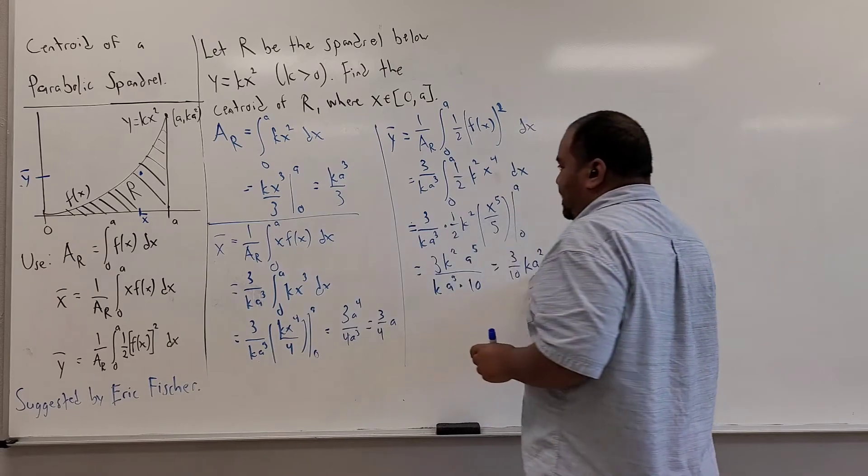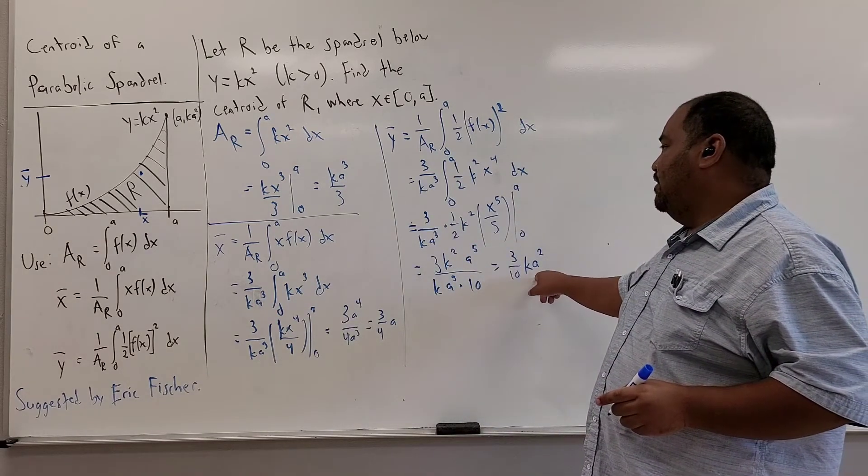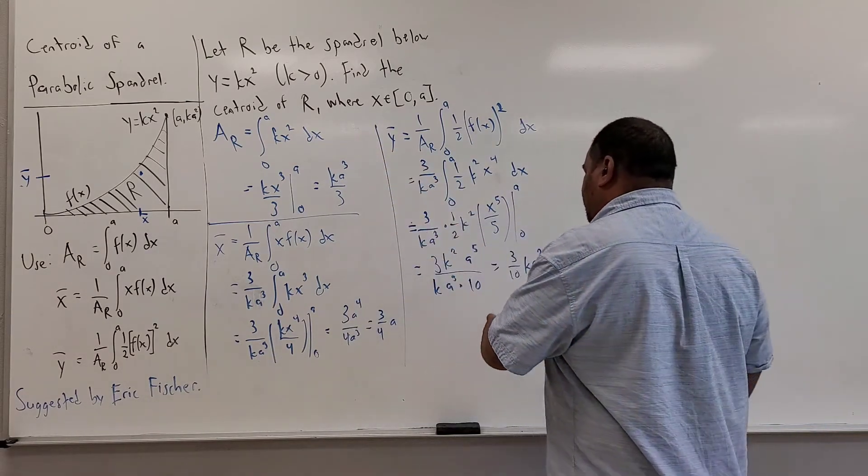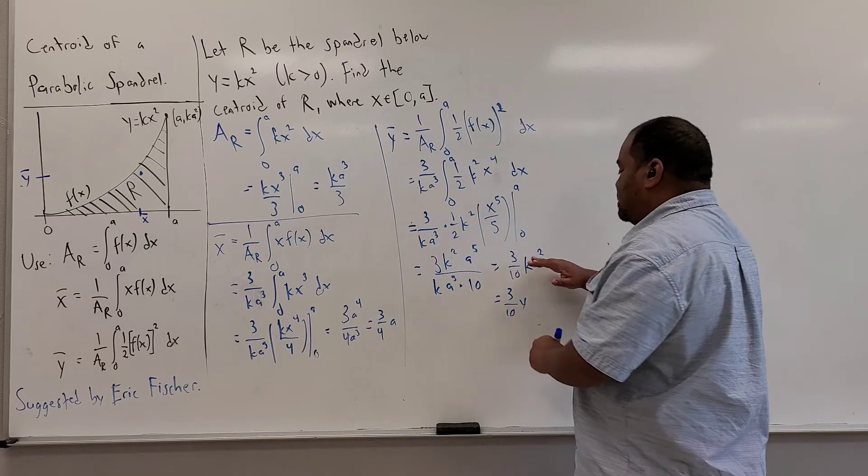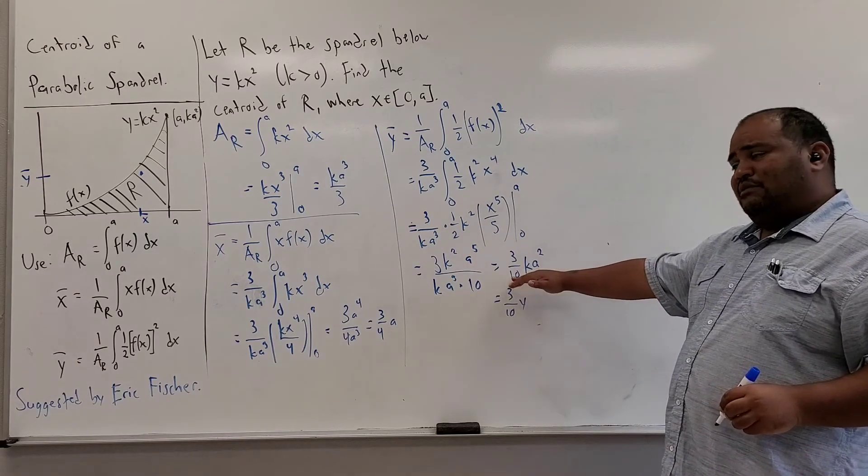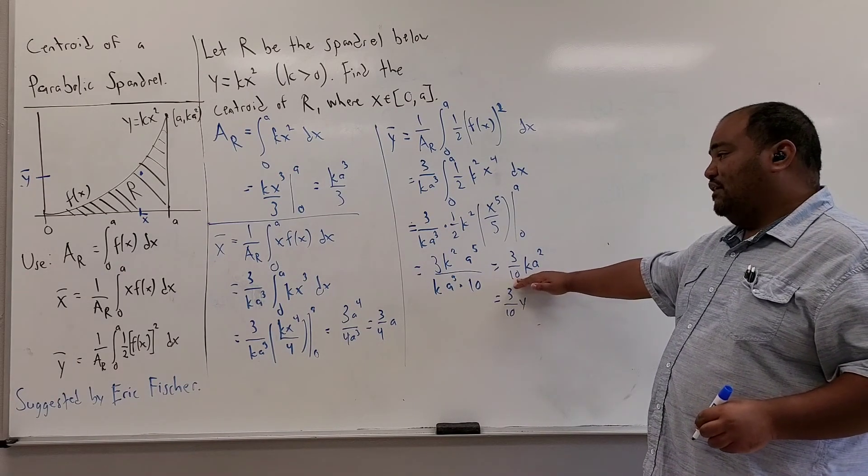If you'll notice, this depends on the specific height evaluated at a. So we can even write this as, say, 3 over 10y. But to be specific, I can leave it as this, and use the specific values of k and a that I may have available. Thank you.